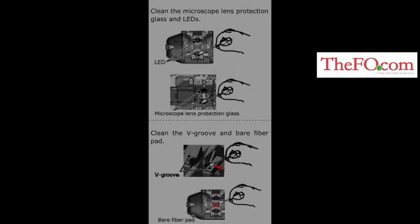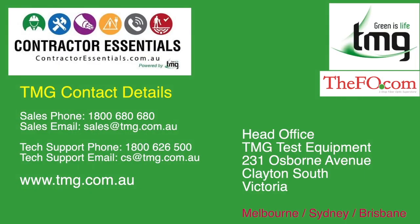If your splicer does need servicing then contact TMG support on 1800 626 500, or if you want pricing on a new 72C kit or require spare parts such as electrodes or cleaver blades, then call our sales office on 1800 680 600. Thank you until next time.